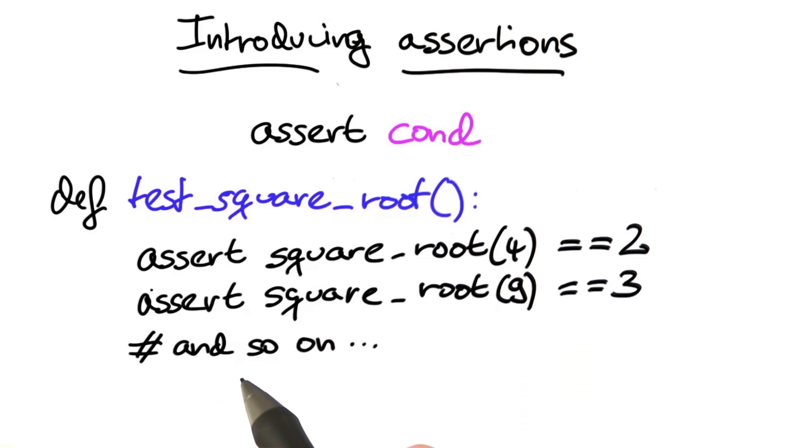And if any of these tests fail, that is, if the result of square root of 4 is not 2, then the assertion will fail and throw an exception.